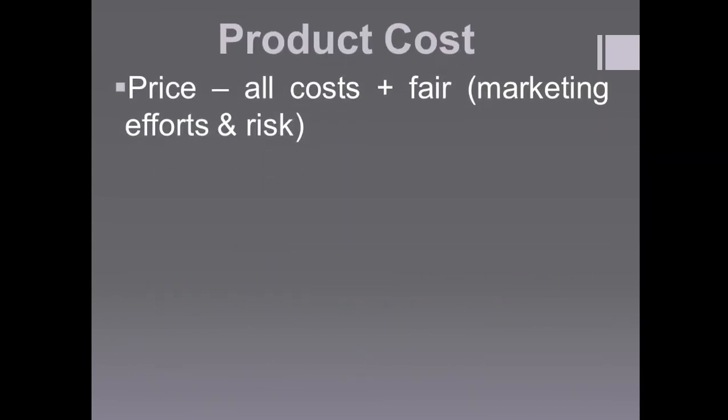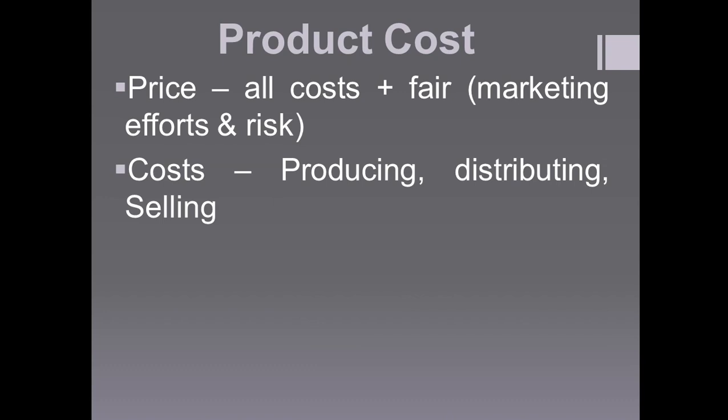The first factor is product cost. Product cost includes all the costs — the marketing efforts, marketing risk — and the costs incurred from producing, distributing, and selling the product. All these together make up the product cost.